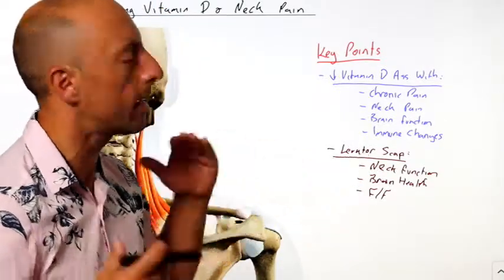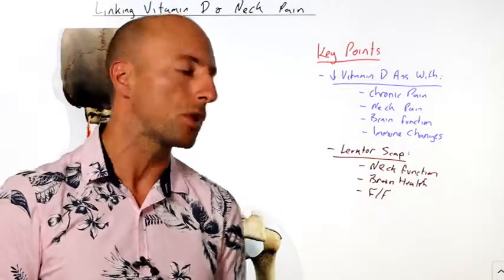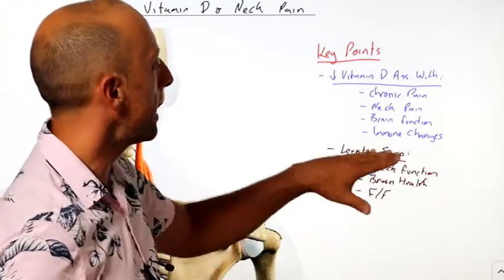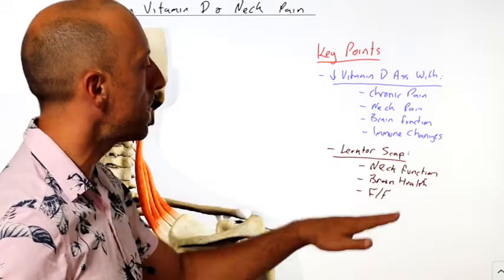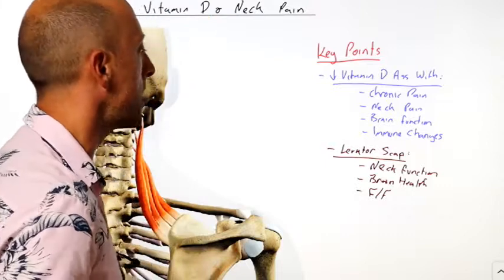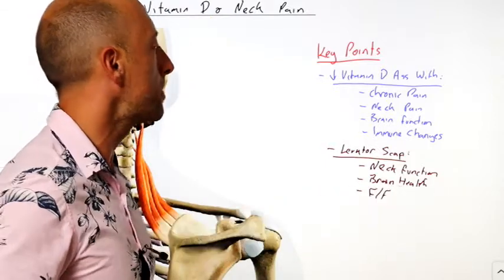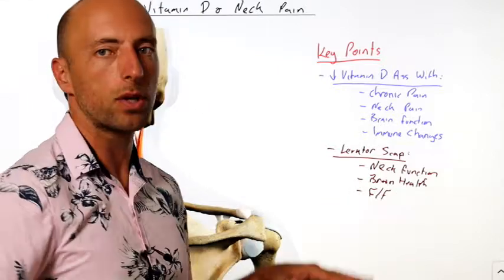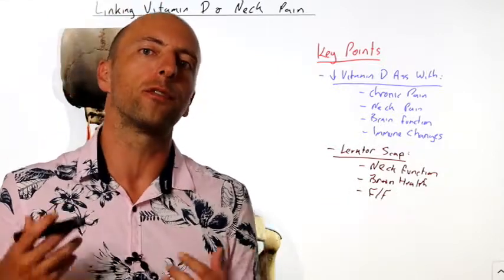This is not a research-based thing, it's just something that's been observed over the years clinically in some offices. When levator scap goes horribly wrong, we end up with neck problems, cervical disc issues sometimes, brain health problems due to the changes in the upper cervical spine, and activation of our fight or flight responses, our sympathetic outflow.